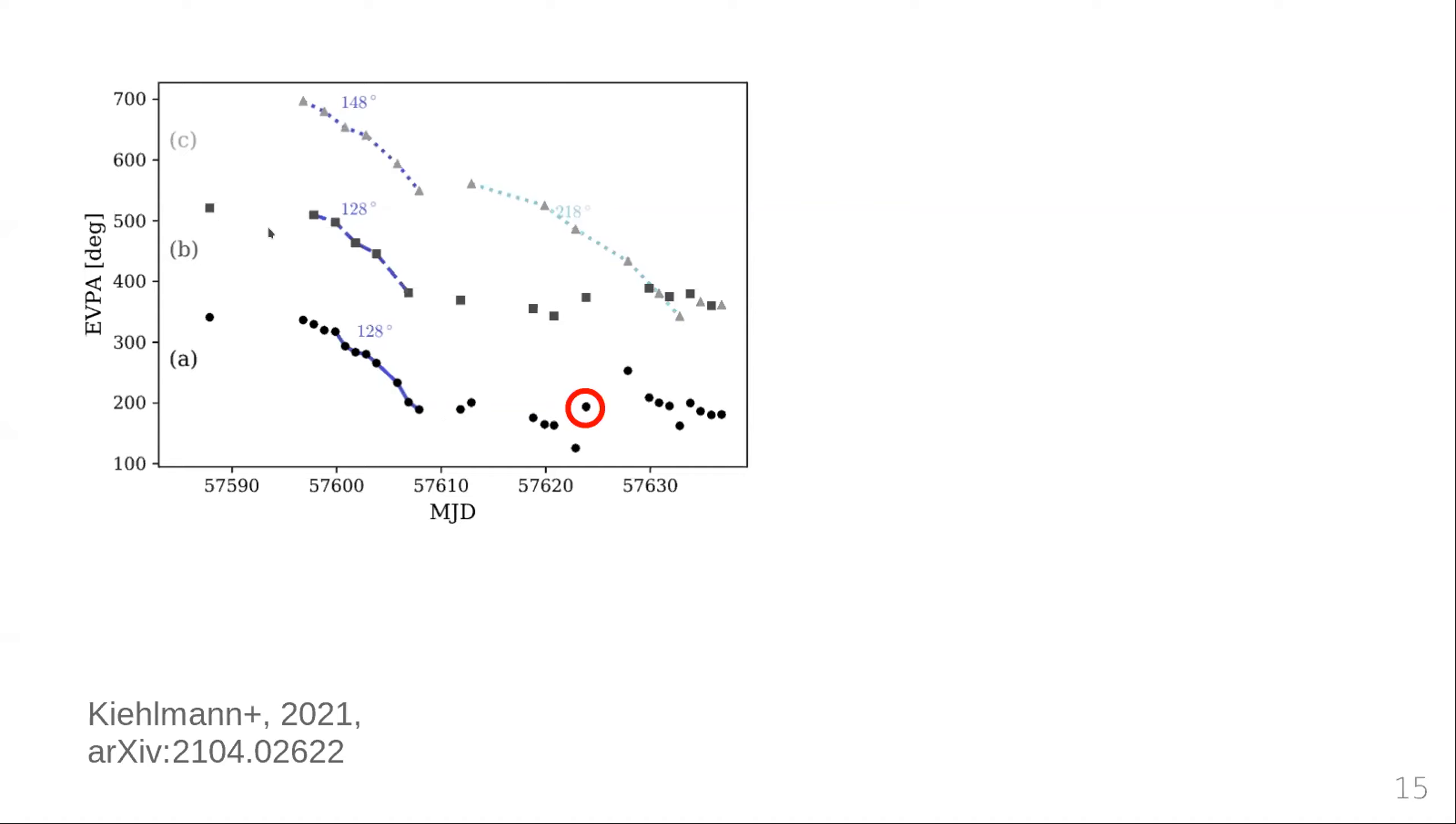Now as a demonstration of how time sampling affects our results, I've removed every second data point here and every other second data point up here. One thing you can see is here we identify a much longer rotation than we do down here. That is because we require a certain amount of smoothness to accept data as a rotation. Here we have some short term variability, which is not consistent with our requirement for smoothness. So this is not considered part of the rotation. But here, by removing some data, we artificially smooth out the short term variability and end up with what seems to be a much longer rotation. That's one of the effects that time sampling can have on identifying rotations.